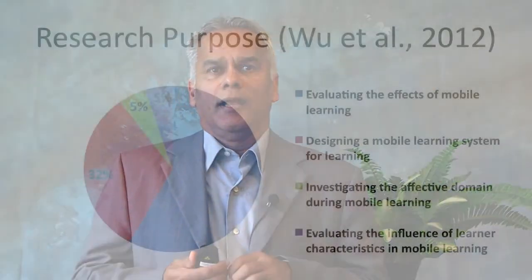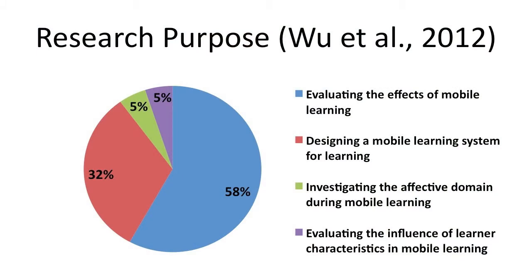There was a research study done by Dr. Wu et al. in 2012. They analyzed 164 research studies. The first thing they did was look at what type of studies were done on mobile learning. Based on their analysis, they found that 58% of the studies evaluated the effects of mobile learning — how effective is mobile learning. 32% did research on designing a good mobile learning system. 5% investigated the affective domain during mobile learning, which has to do with how people feel about mobile learning. And 5% evaluated the influence of learning characteristics in mobile learning.